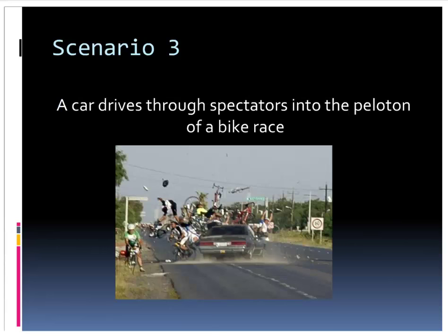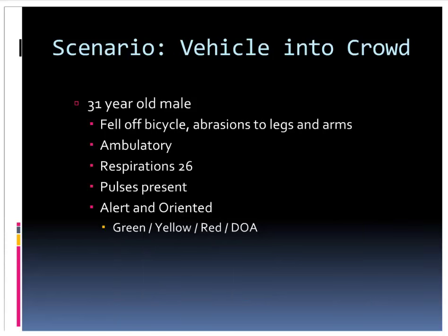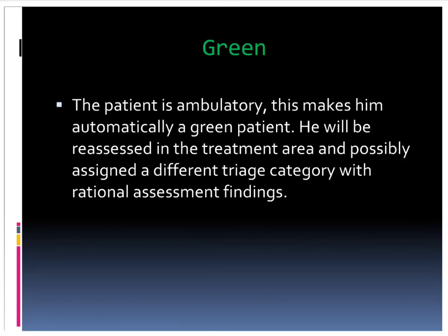New scenario: a car drives through spectators into a peloton of bike racers. A 31-year-old male fell off his bicycle with abrasions to his legs and arms. He's able to walk, breathing 26 times per minute, has a pulse at the wrist, and is alert and oriented. This patient is green. In reality, this patient would walk to the green treatment area and we'd never even assess his RPMs because he meets that initial criteria of being able to walk. He'll be reassessed with more conventional methods at the casualty collection point.